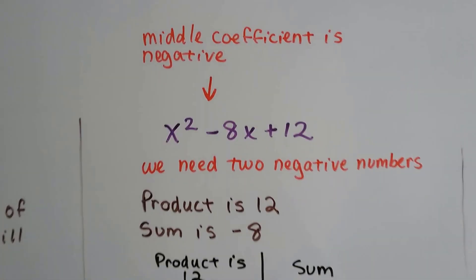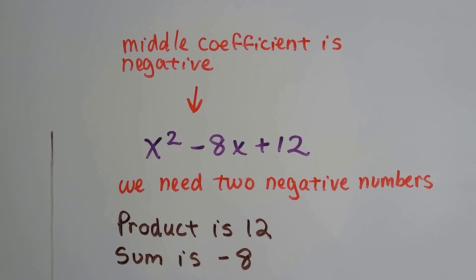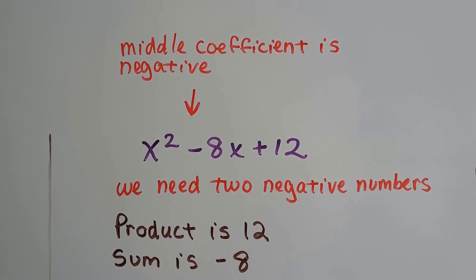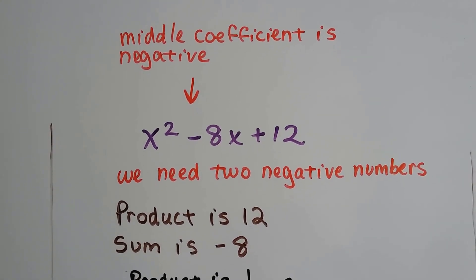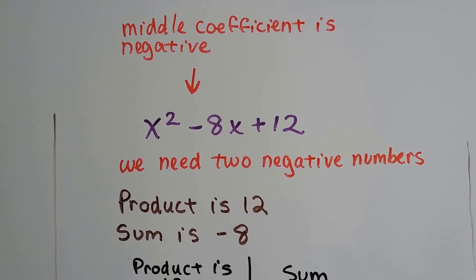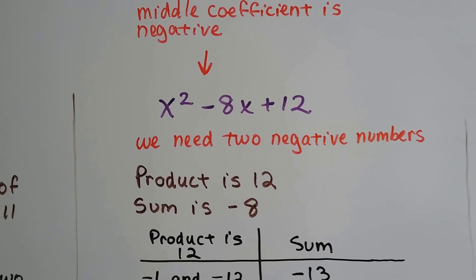Now look at this one, we've got x² - 8x + 12. And we've got a middle coefficient that's a negative, so that means we need two negative numbers. And the product is going to be a 12, and the sum is going to be a negative 8, so we make our little table.